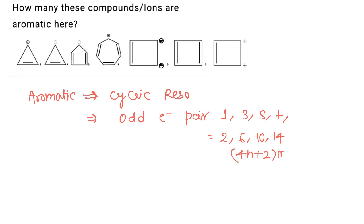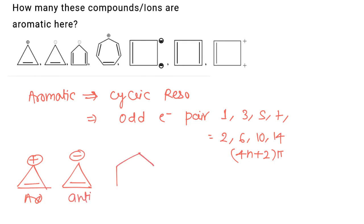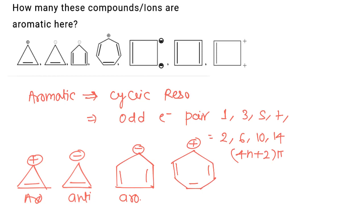In the first example, the cyclopropenyl carbocation has one pair of electrons, so it is aromatic. In the second case, it has two pairs of electrons — even electron pairs indicate anti-aromatic. In the third case, the cyclopentadienyl anion has three pairs of electrons, so with complete cyclic resonance it is aromatic. The next one is the tropylium carbocation, one of the most stable carbocations, having seven aromatic resonating structures and three pairs of electrons — so it is aromatic.